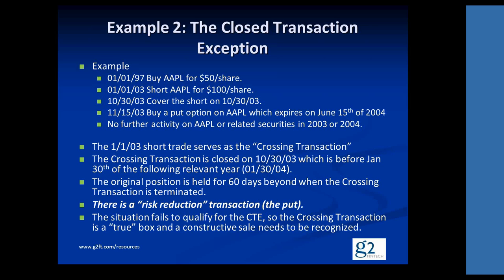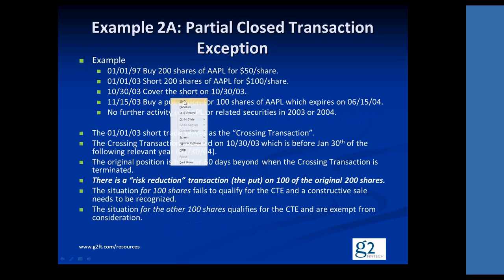We also failed the serial hedge exception because we never got rid of the risk reduction transaction. So here's the first example of a failure, which means those shares that we bought at $50 each and shorted for $100 each — we have to recognize for our 2003 taxes a $50 capital gain per share of Apple involved in the short trade. This will also affect the holding period and the cost basis of the shares involved, bumping them from $50 per share up to $100 per share — all normal parts of the constructive sale rule.